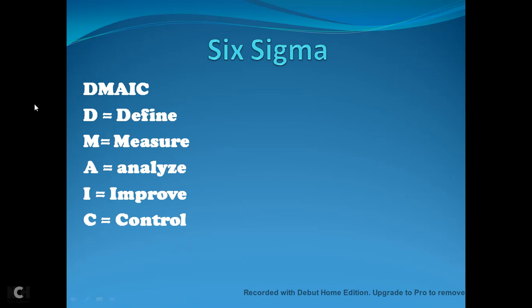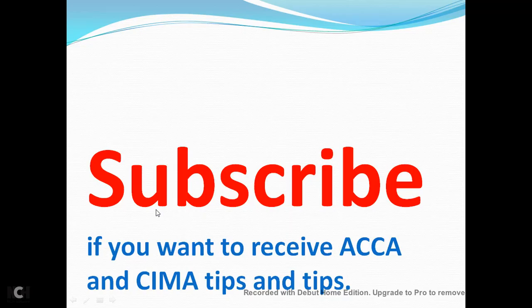In summary, DMAIC stands for: Define — define the customer needs; Measure — measure the existing process and collect data; Analyze — analyze the data and set targets; Improve — change processes to remove defects; and Control — check whether the established improvement processes are being followed.